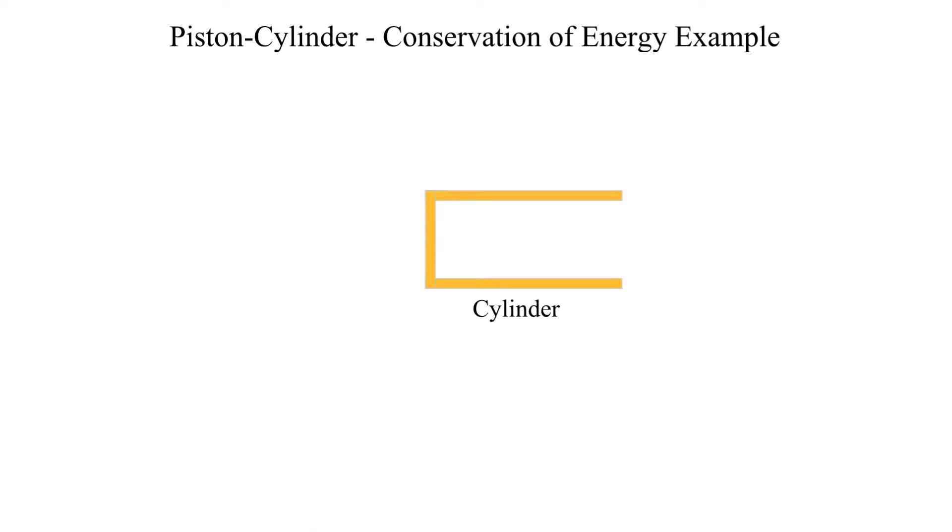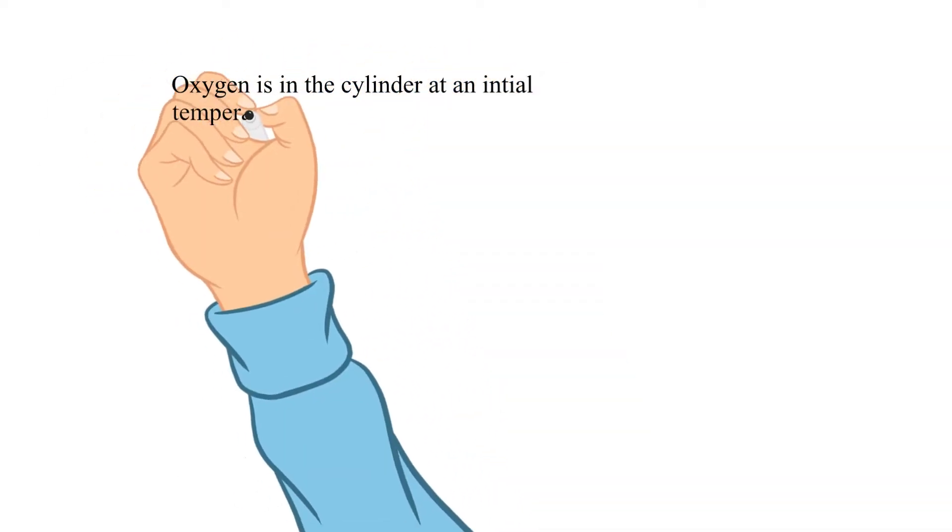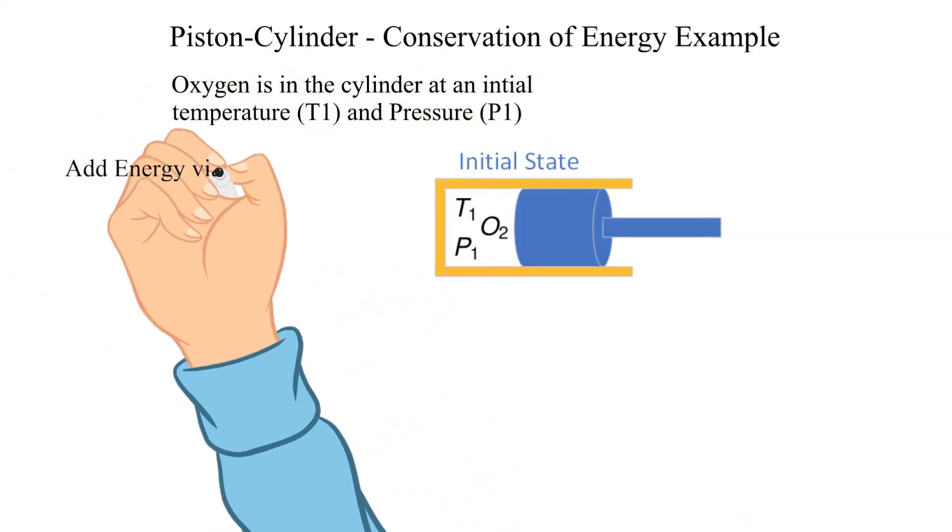Let's start with a frictionless cylinder. Then let's add a frictionless piston. Oxygen is in the cylinder with an initial temperature and pressure denoted as T1 and P1 respectively.